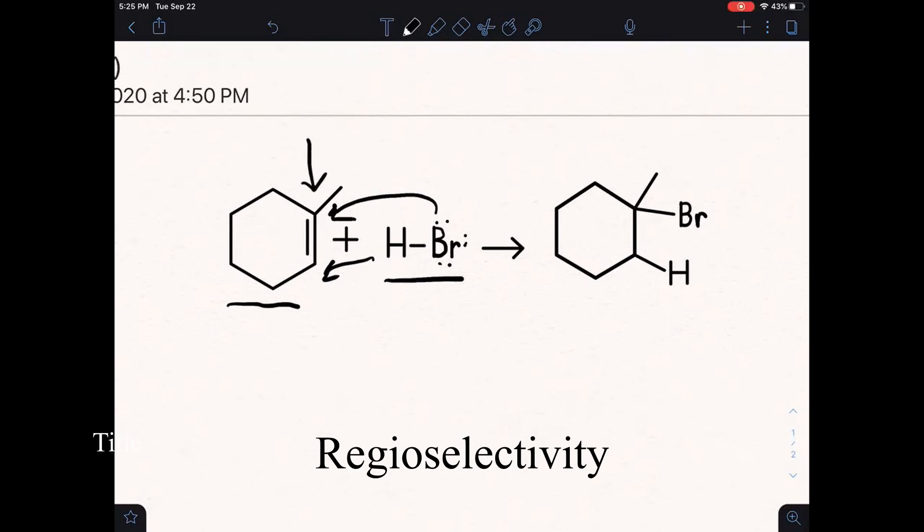The bromine is always going to want to attach to the spot on one side of the alkene that has more substituents, and as a result this H is always going to go to the other side of the alkene with less substituents. This only applies whenever there is a difference of substituents on the sides of the alkene.